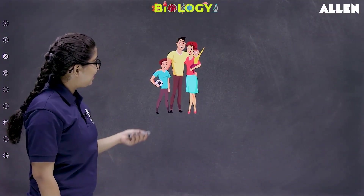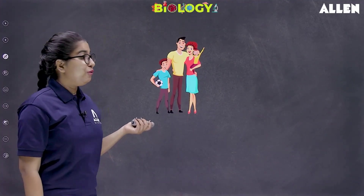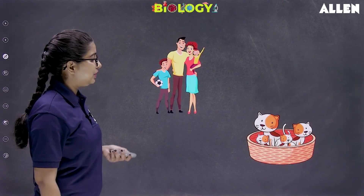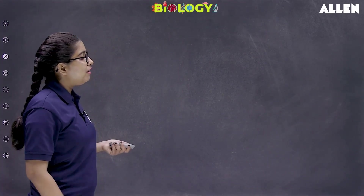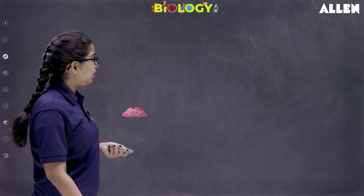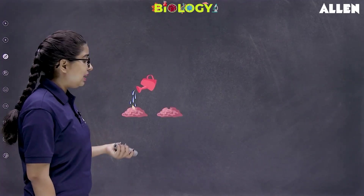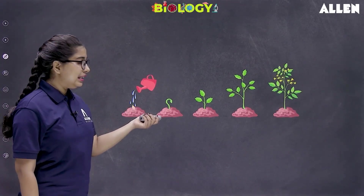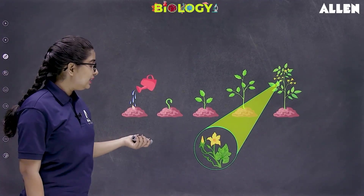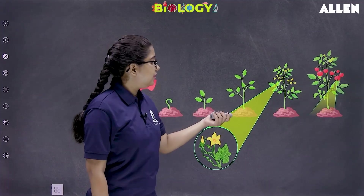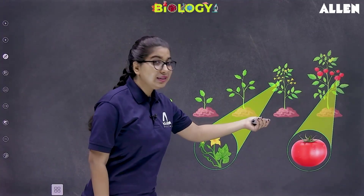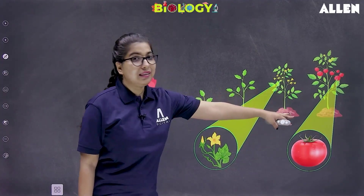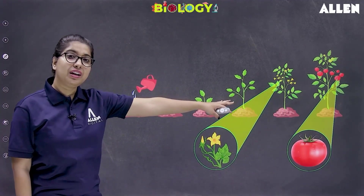Here you can see a family of human beings — babies along with their parents, and cats with their kittens. That was all about animals including human beings. What about the plants, dear students? Like I told you, we put the seeds into the soil, the seedling arises after it germinates, and then it grows and develops into an adult plant. Further, if it is a flowering plant, flowers will come and then we get fruits also.